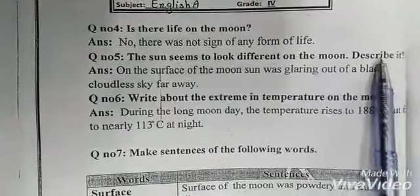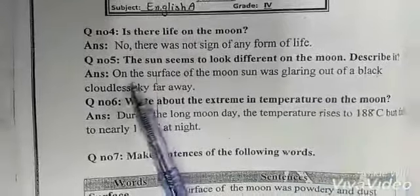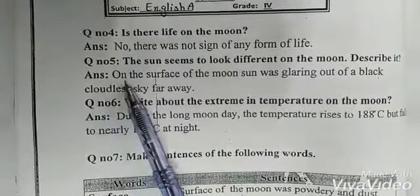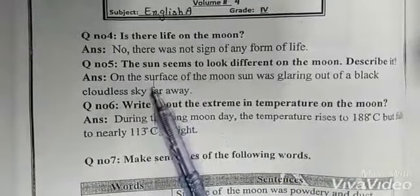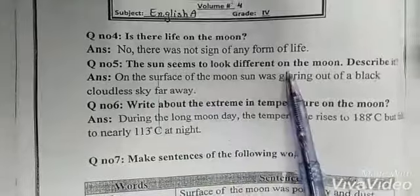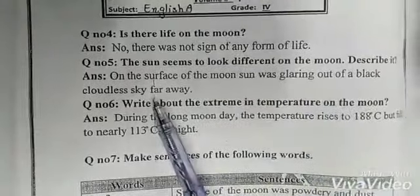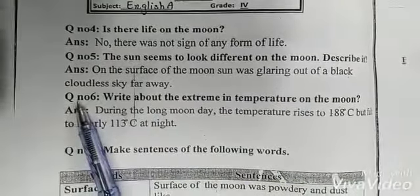Describe it. Beyan karay. Answer: On the surface of the moon, sun was glaring out of a black cloudless sky far away. Chand ki sata par suraj baghair baadlon ke chamak raha tha. Question number...